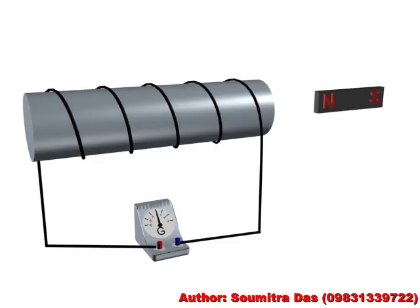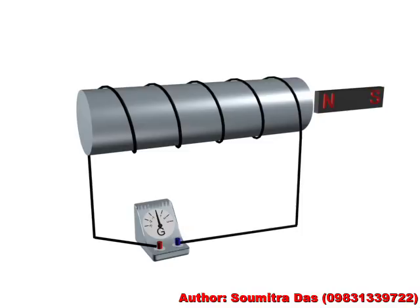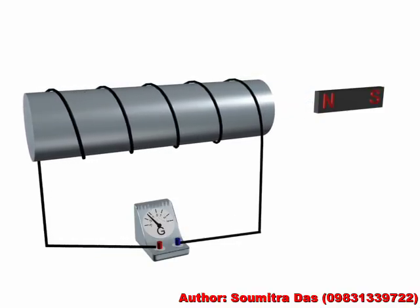When the coil is moved towards the magnet, the needle of the galvanometer deflects towards the right. When the coil is moved away, the galvanometer needle is deflected towards the left.